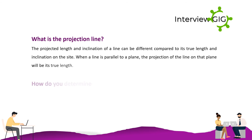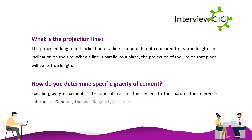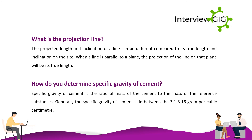How do you determine the specific gravity of cement? Specific gravity of cement is the ratio of the mass of cement to the mass of a reference substance. Generally the specific gravity of cement is between 3.1 and 3.16 grams per cubic centimeter.